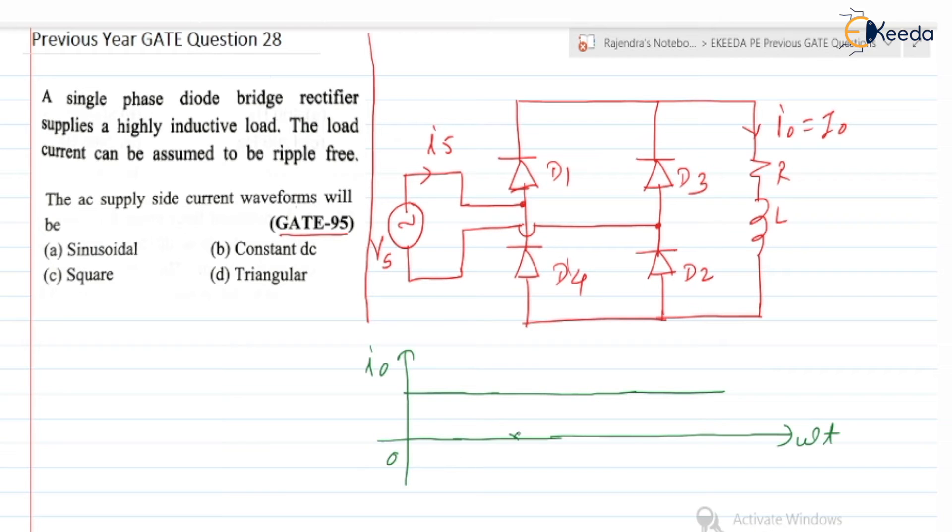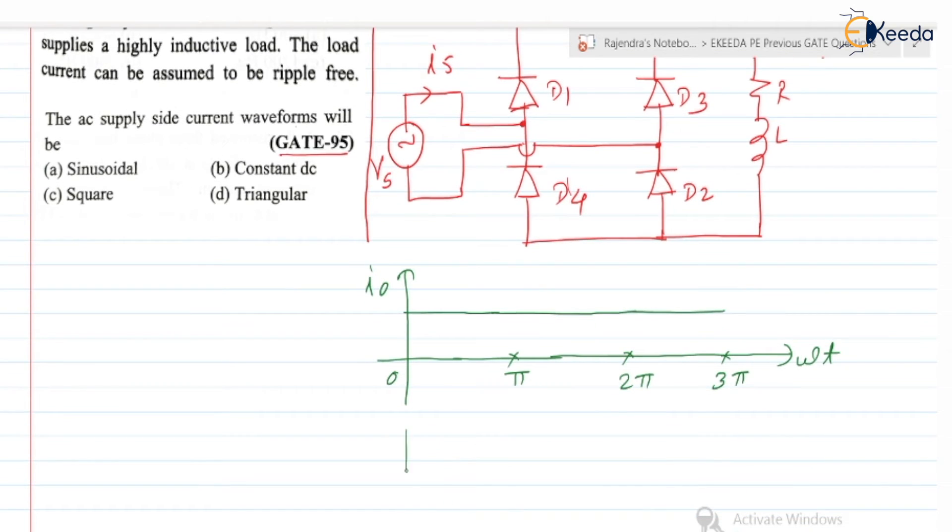0 till pi, pi by 2, 2 pi and 3 pi by 2. Now we are going to draw the waveform for the Is, supply current Is.